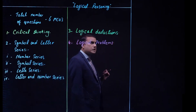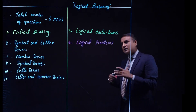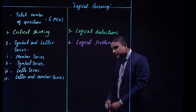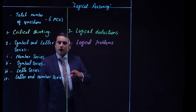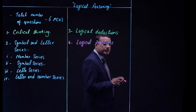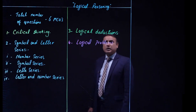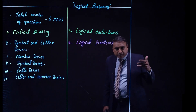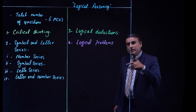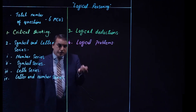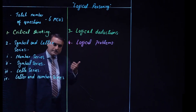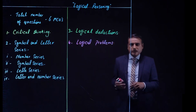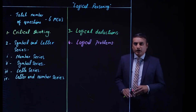Logical problems are the toughest because you get confused very easily. Two statements are given — you may call them conditions — and depending on these two statements, two conclusions are also given. At the third step, you are required to tell which conclusion is the true one: whether it is conclusion one, conclusion two, either one or two, both one and two, or neither — five options are given, which is very confusing.